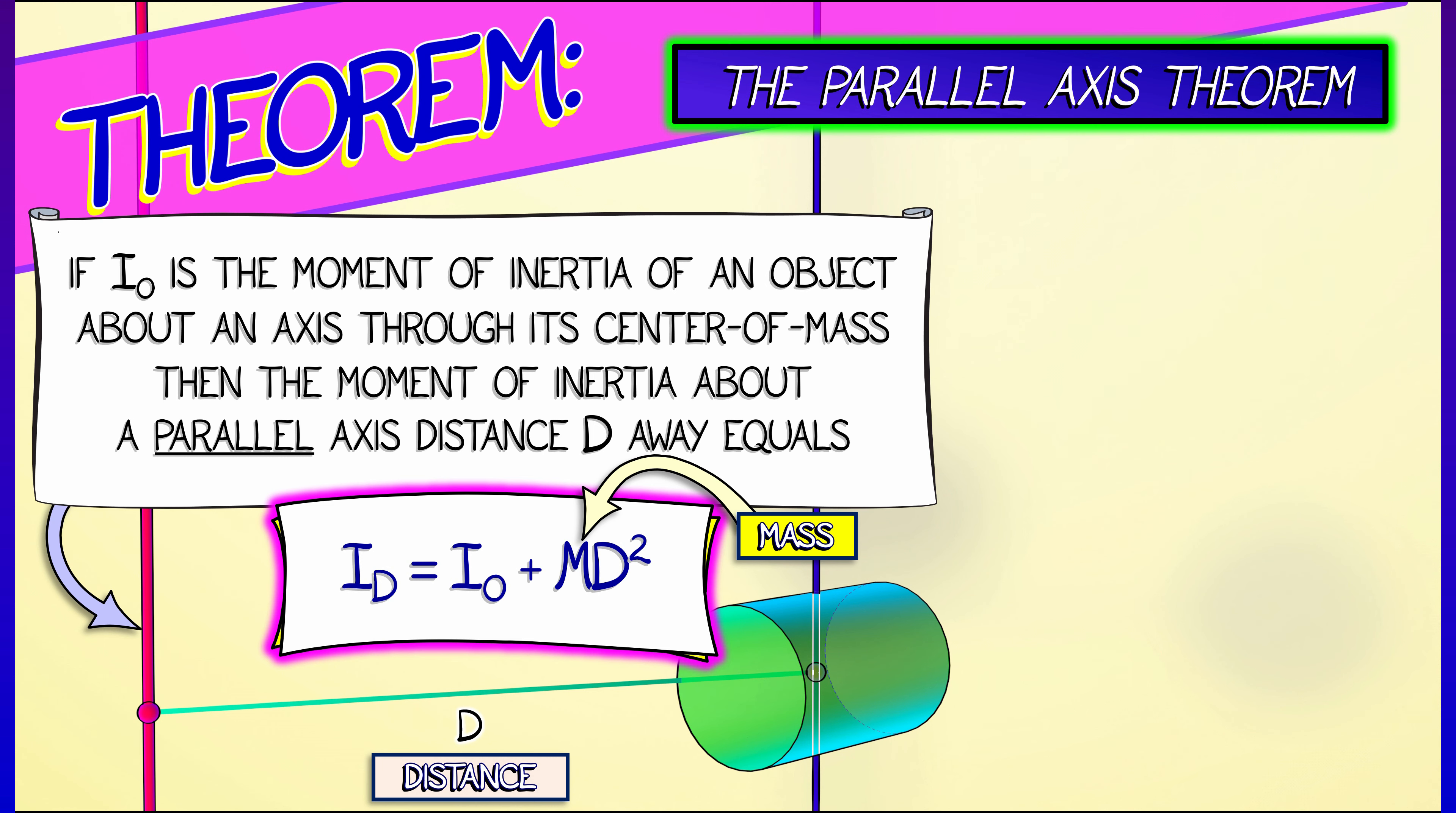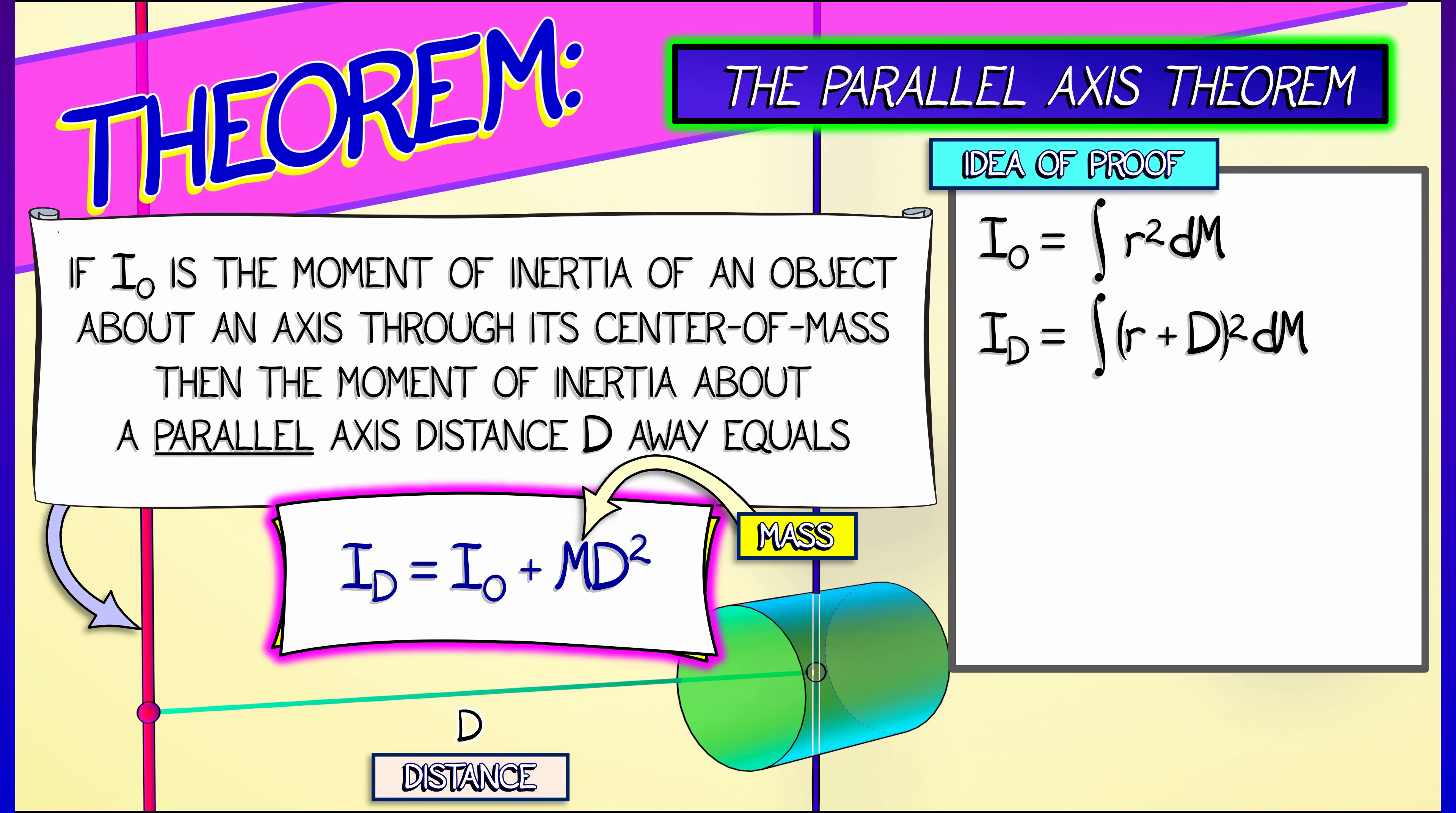Let's call this translated moment of inertia I sub d. Okay, here's how we prove this. By definition, I0 is equal to the integral of r squared dm, where r is the distance to the axis going through the center of mass. What is I sub d? Well, by definition, that is the integral of quantity r plus d squared dm, because it's a distance d away from that centroid.